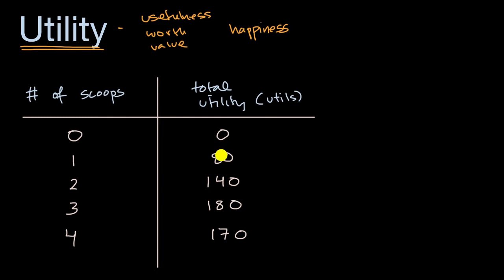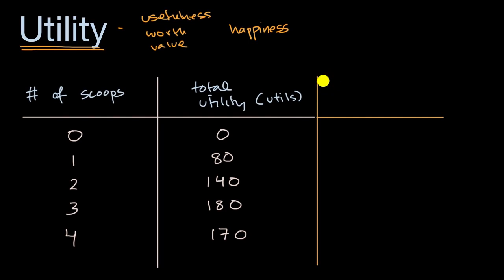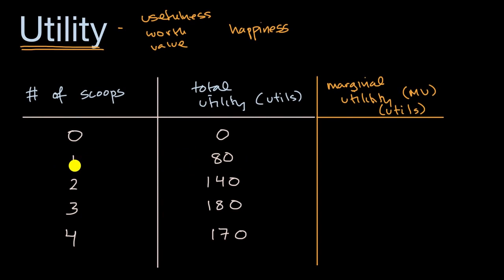Something interesting is happening. As you got more scoops from zero to one, one to two, two to three, you are getting more utility — but then when you have four scoops, your total utility goes down a little bit. Maybe it's because people can't eat four scoops and they're left with a bowl of melted ice cream. Another thing to think about is how much the total utility increases every time you get an incremental unit — that general idea of how much more utility you get for that incremental unit is what we call marginal utility, or MU.